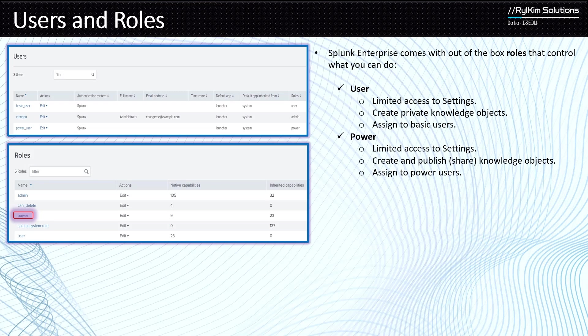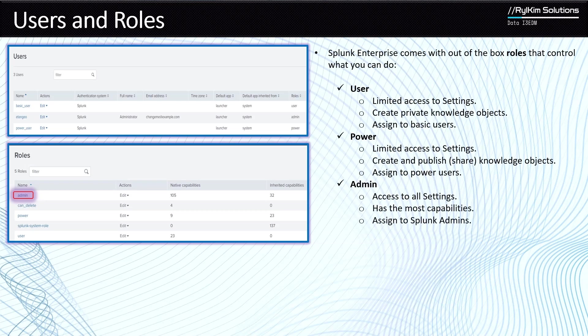If you want somebody to be a power user, you can assign them the power role. The admin role is the one that has the most capabilities — it has access to all the settings. Throughout this course, we are going to be using the admin role so you can see everything that Splunk has. When you install Splunk, you automatically become the admin, meaning the admin role is assigned to you. This role has the most capabilities and is assigned to Splunk admins.